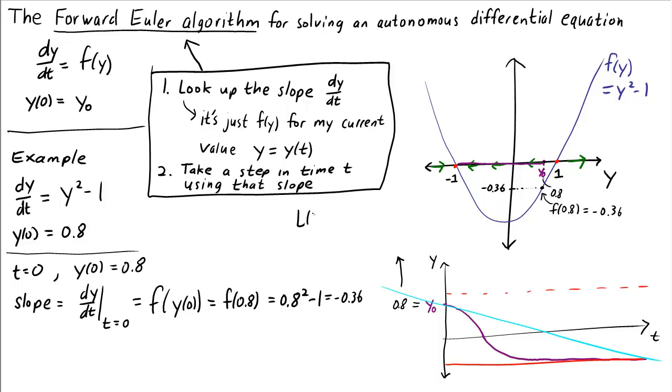Equation for the linear approximation is L(t) equals y(0) plus the slope dy/dt at time 0 times (t minus 0). Plugging in our specific values, we know that y(0) is 0.8. The slope at time 0 is negative 0.36. And then we multiply by t. So that's the equation of our initial approximation.